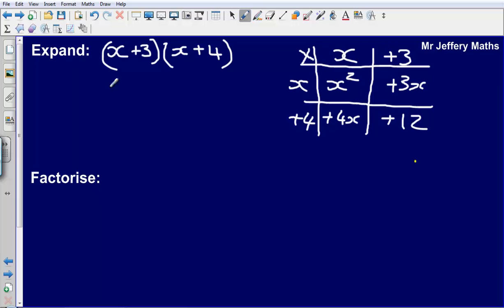So then write these things out: x squared plus 3x plus 4x plus 12, and then collect the two bits in the middle together because they're the same, they're like terms is what we would say they are.